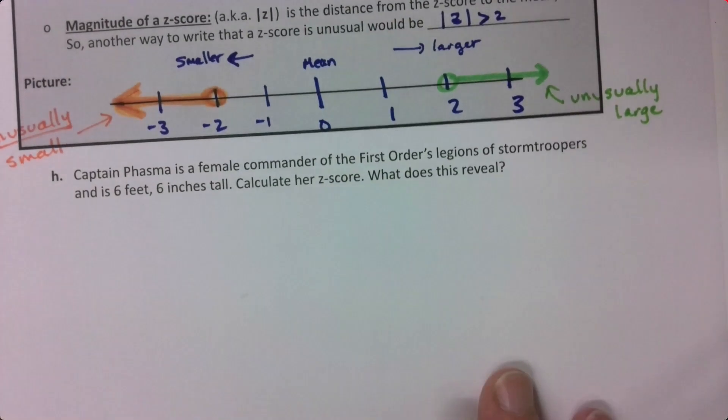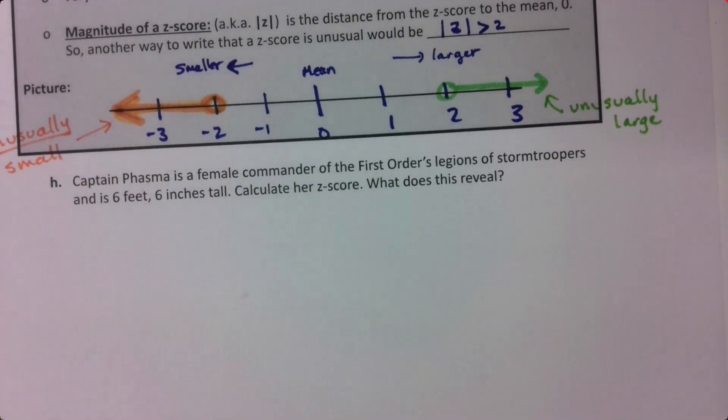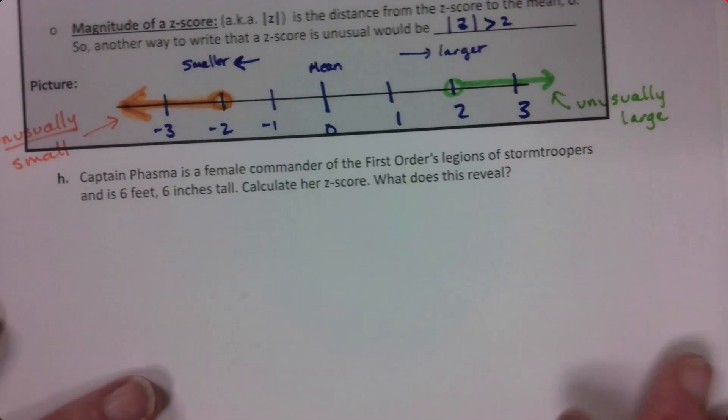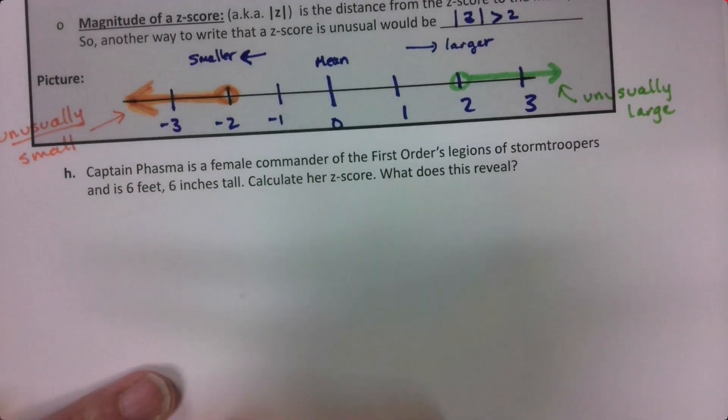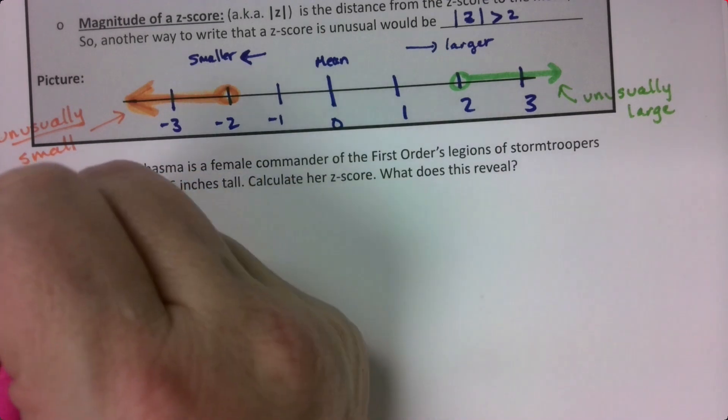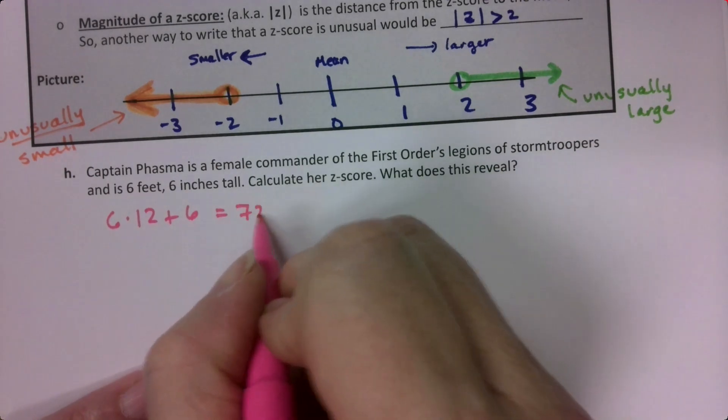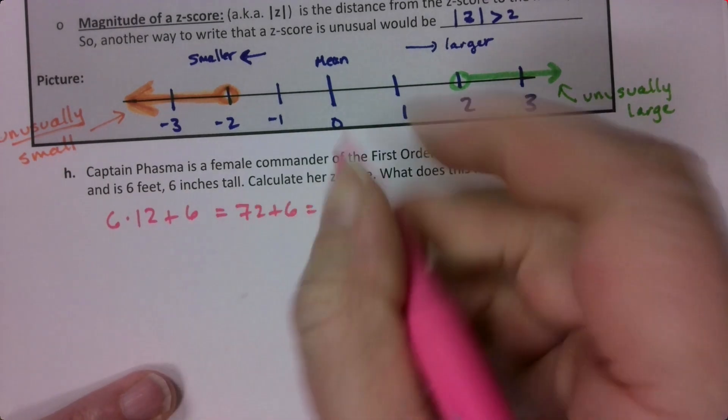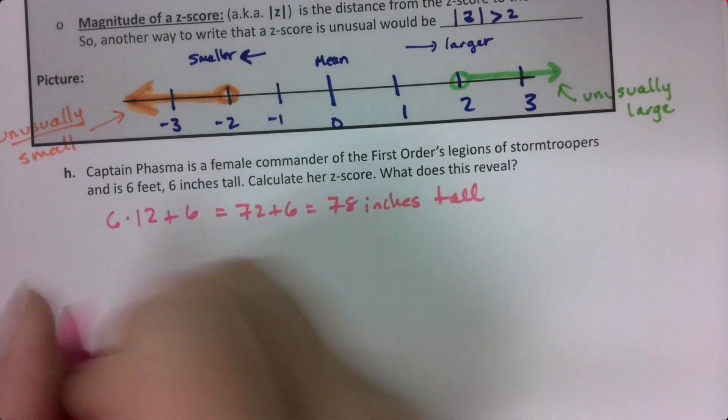Let's look at Captain Phasma. She was the female commander of the First Order's legions of stormtroopers, dressed all in silver. We want to find her z-score. Captain Phasma had a height of six feet six inches tall. So six times 12 is 72, plus six is 78. She's 78 inches tall.